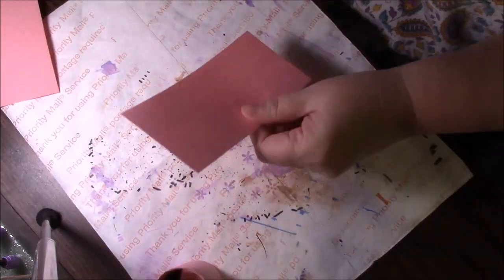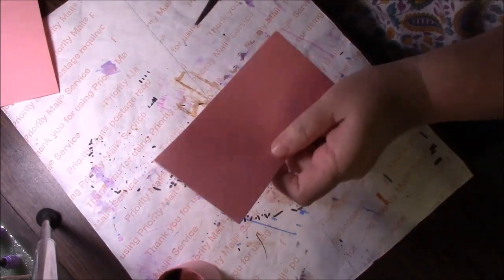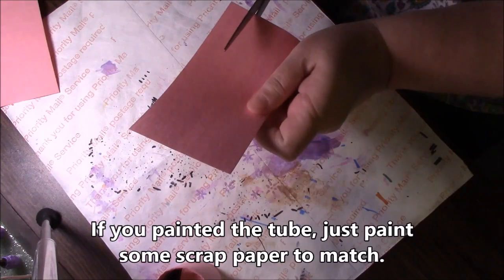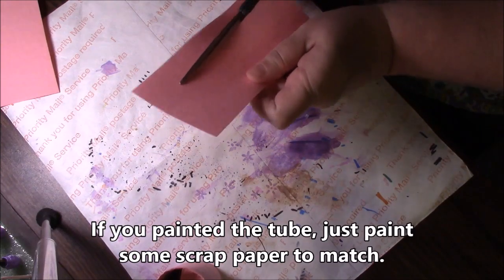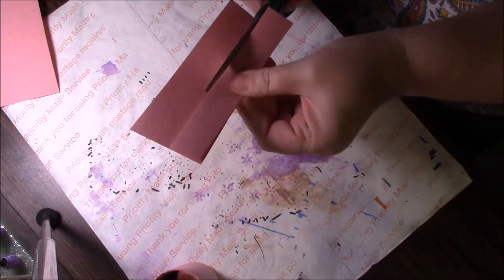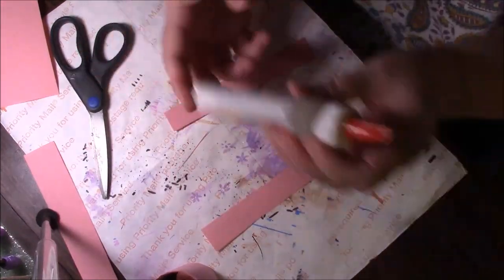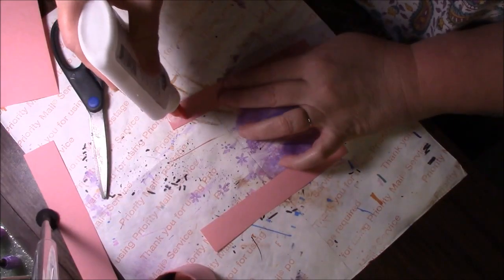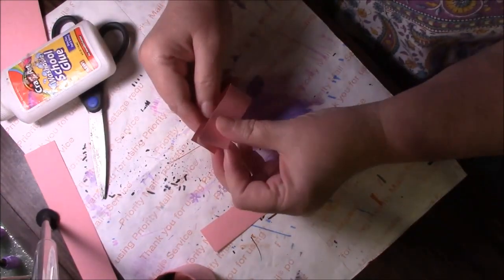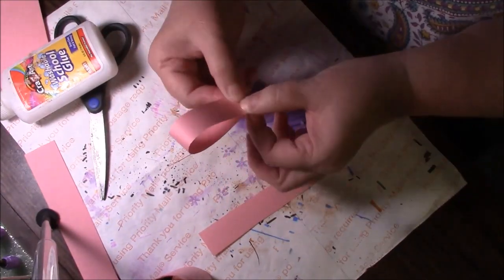You can take that piece of pink scrap that we have left over from wrapping the toilet paper tube and you can make two long strips. I'm just going to use the other one as my guide to make the second one the same, and we're going to put a dab of glue on one end. We're just going to fold over and press for just a little bit.